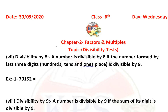A number is divisible by 8 when we form a new number using the last three digits of the given number — the hundreds, tens, and ones place digits. We take those and form the new number. If that new number is divisible by 8, then the given number is also divisible by 8. Now we learn by example.